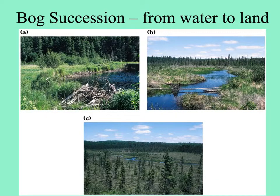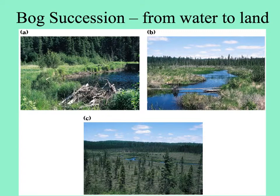Bog succession is one of the coolest phenomena and very common in Michigan, where there are many lakes throughout the lower and upper peninsula. In these little freshwater lakes, over time, a mat of mosses — sphagnum moss especially — grows out over the edge of the lake, and as it dies it fills in the edge. After a while, other vegetation can grow on top, and then shrubs and trees come in, until you're left with just a trickle of the river or stream at the bottom, or sometimes it disappears completely.